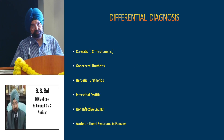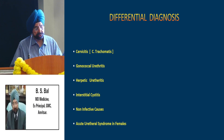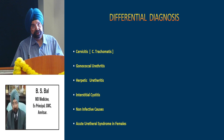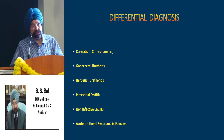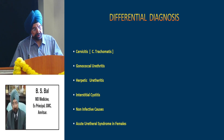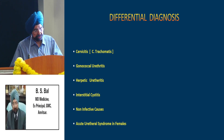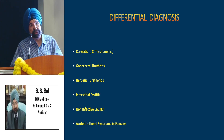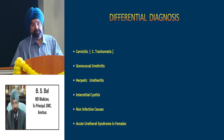Every patient with dysuria may not have UTI. Differential diagnoses include cervicitis — where the discharge is thin — and gonococcal urethritis where there is a thick discharge. Other differentials include herpetic urethritis, interstitial cystitis, non-infective causes, and a peculiar condition called acute urethral syndrome in females, which can mimic UTI.